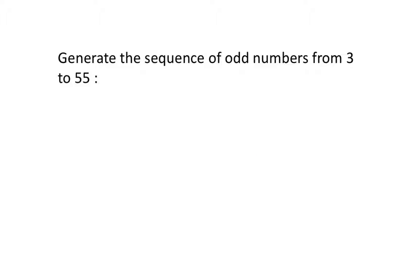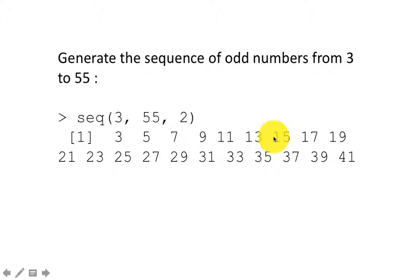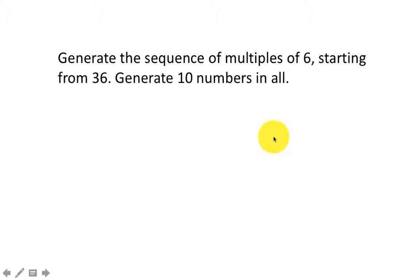Here we are saying generate the sequence of odd numbers from 3 to 55. We want only the odd numbers, 3, 5, 7, 9, et cetera. So obviously, the answer is going to be seq(3, 55, by=2). Or you could say from=3, to=55, by=2. You can do that as well.